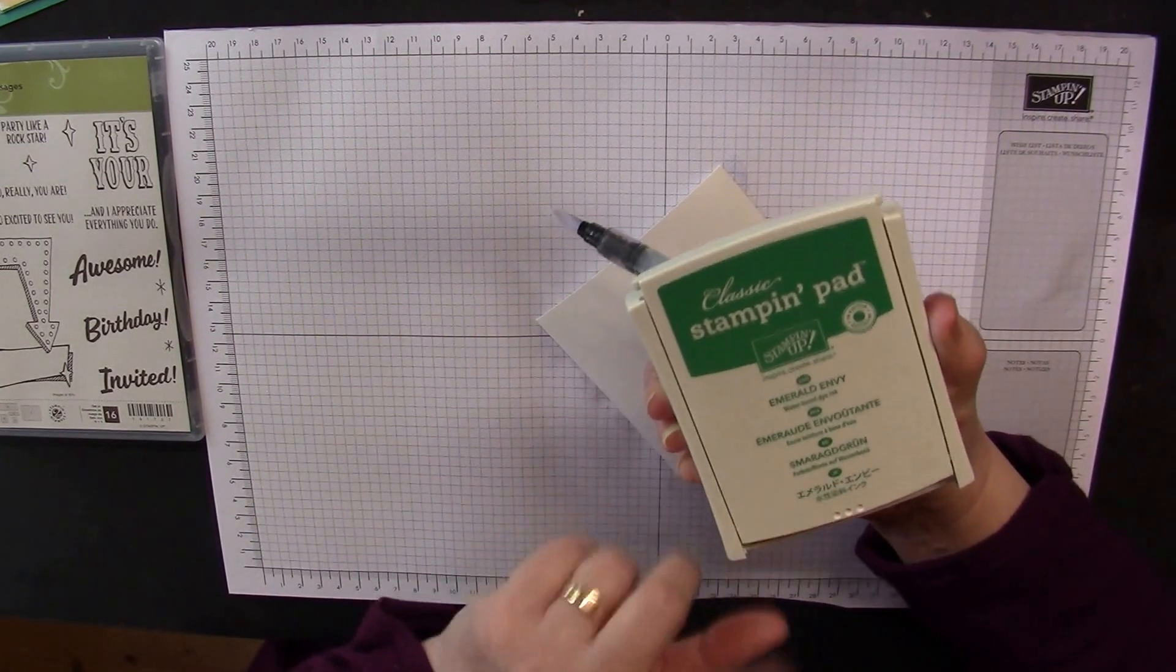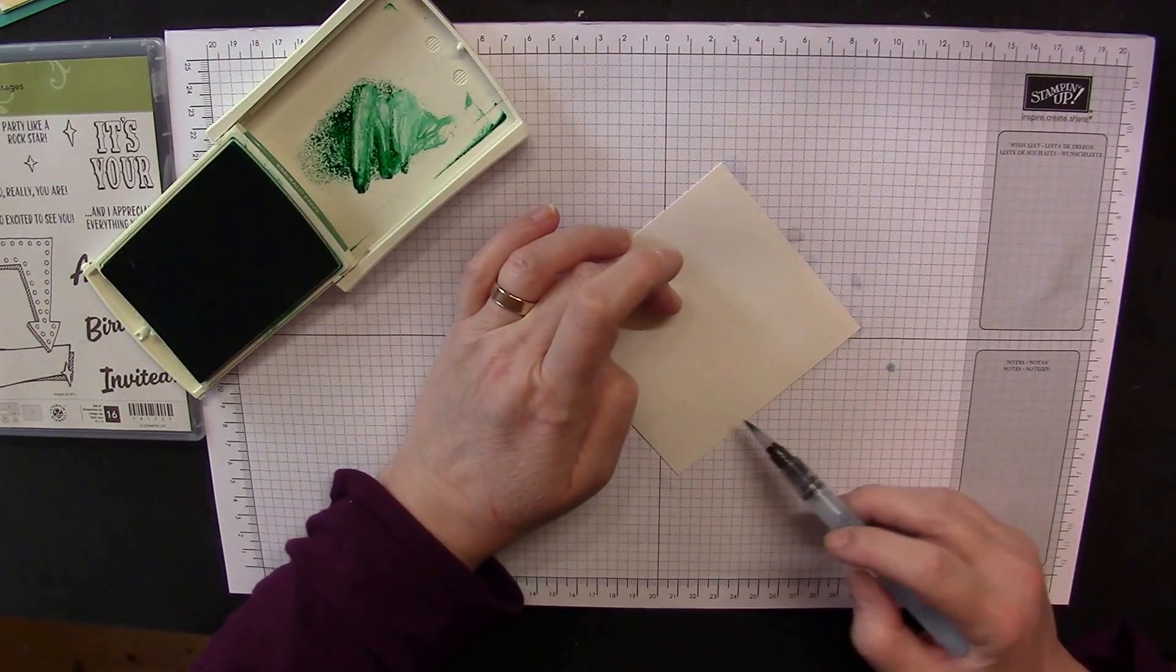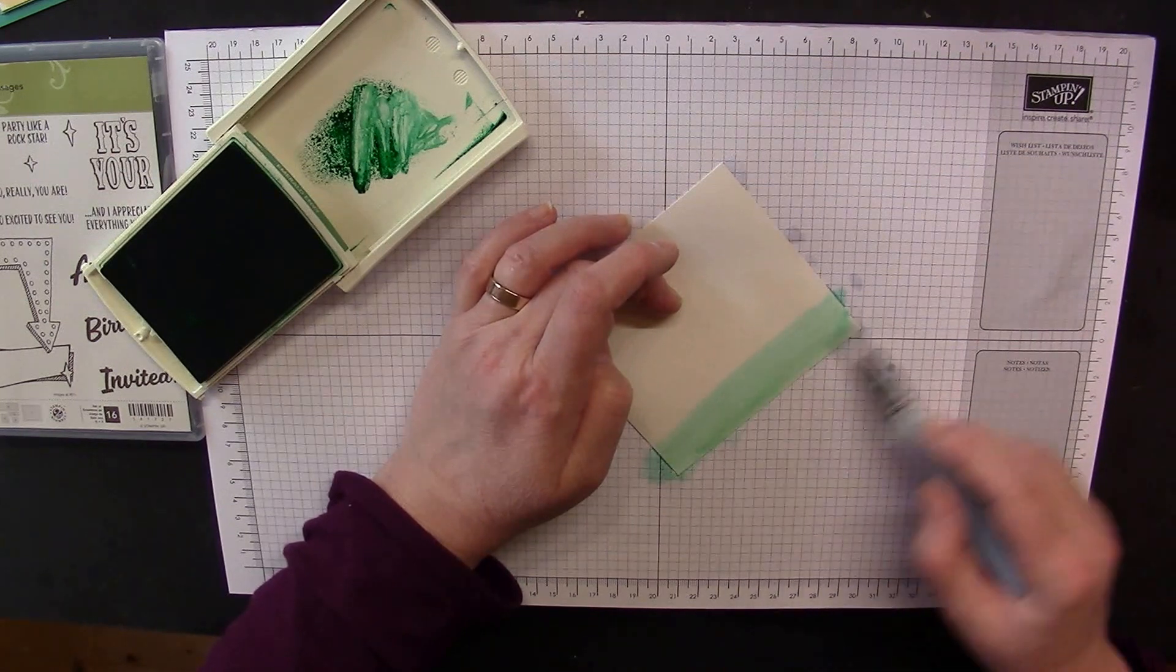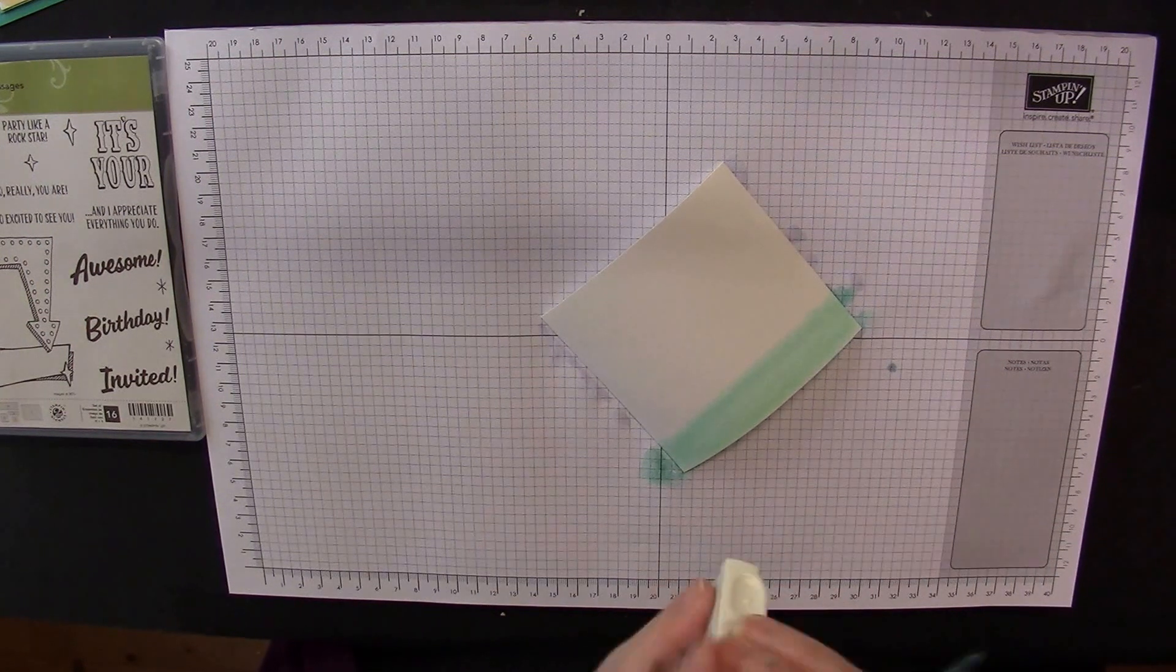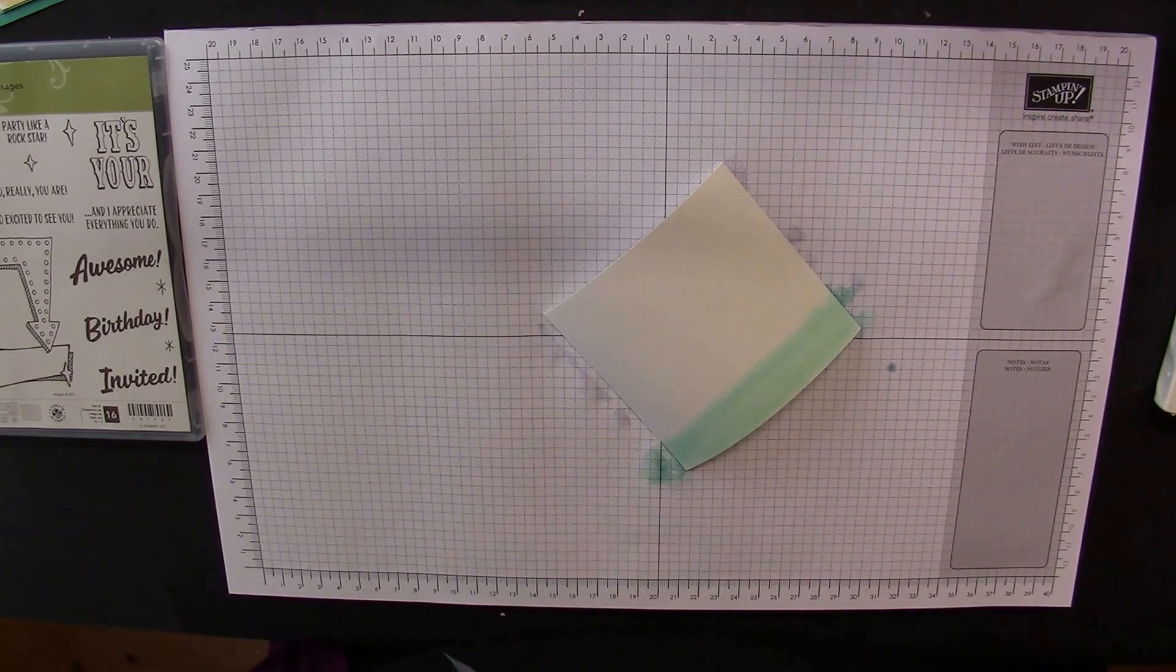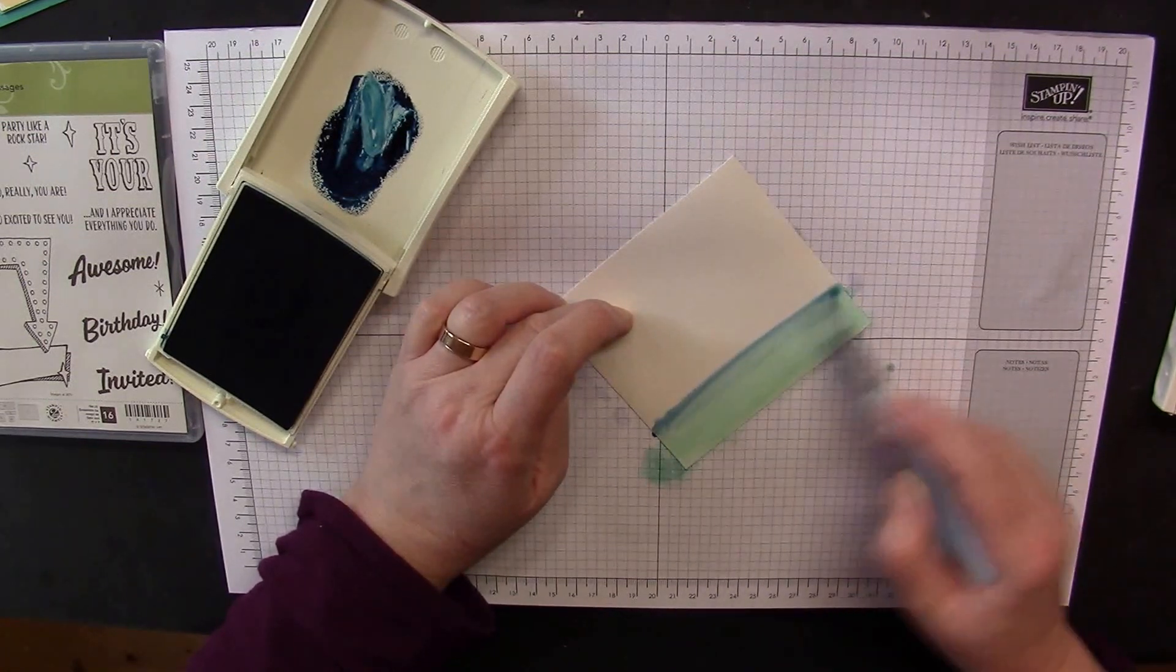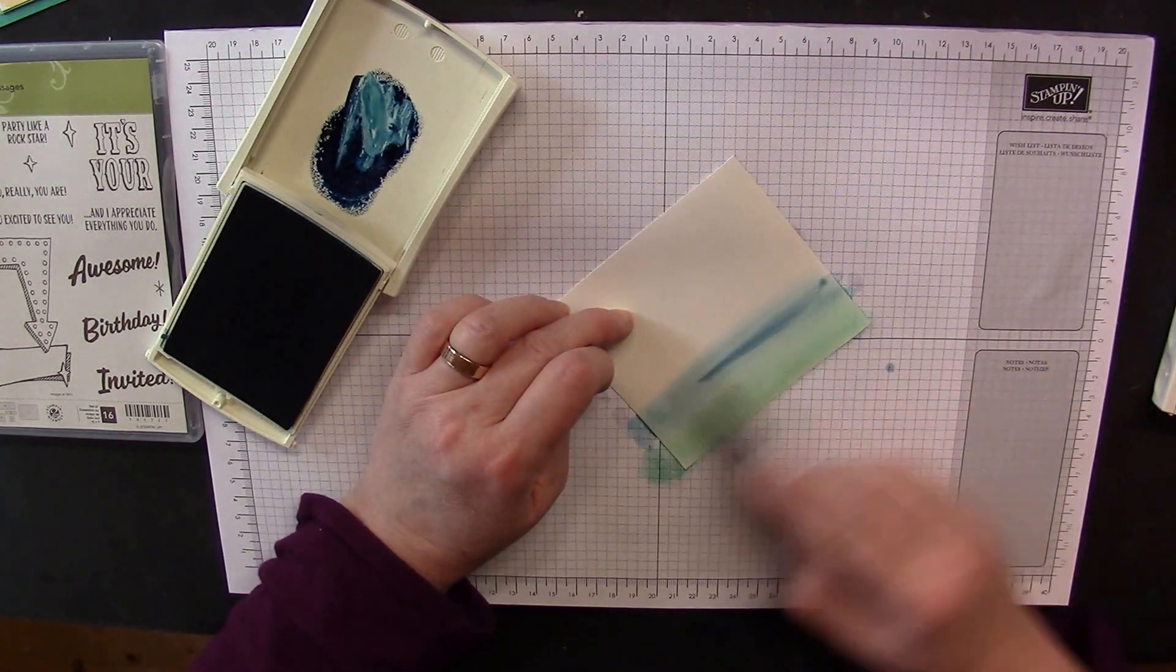It is going to warp whilst it dries, but don't worry about it. I'm going to start with Emerald Envy. We're doing a sort of rainbow color here. Start at the bottom and you'll see it will, because we've made the cardstock wet, it's actually going on and diffusing really nicely. Then we're going with Dapper Denim, my second most favorite after Flirty Flamingo. You want to blend this into the green a bit as well.